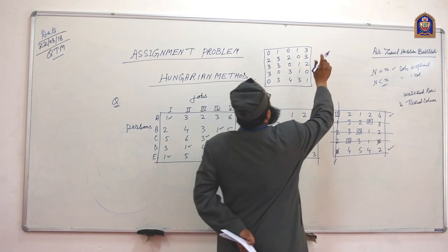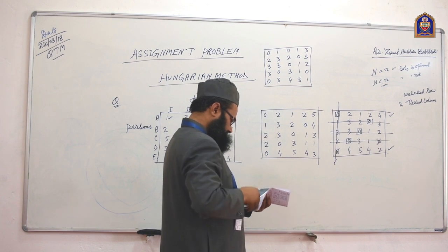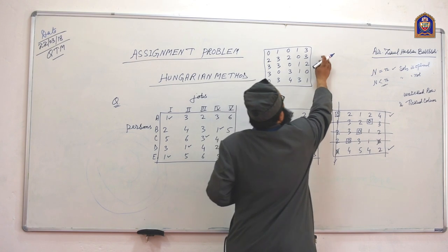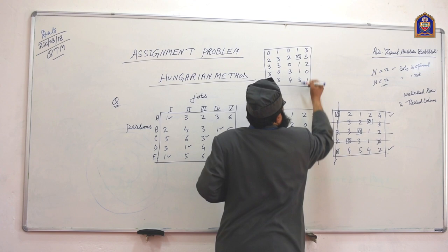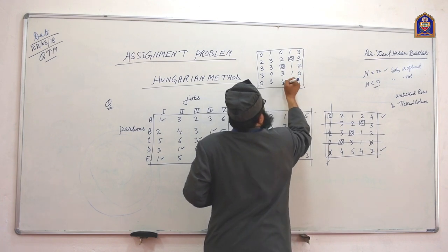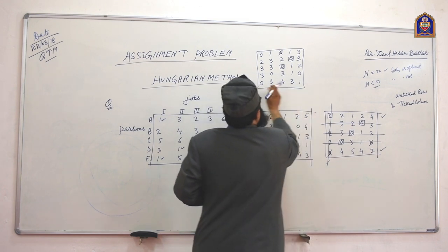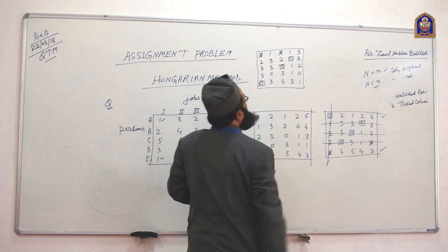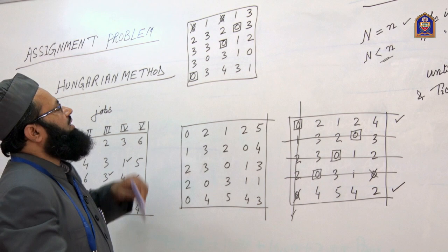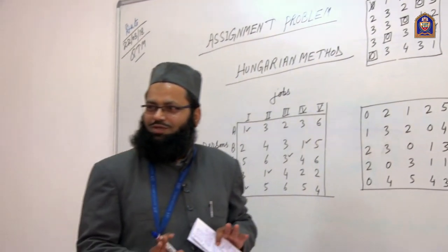Now we assign zeros again. First row has two zeros, leave it. Second row has a single zero, assign here. Third row has a single zero, assign and cross. Fourth row has two zeros, leave it. Fifth row has a single zero, assign and cross. Column operation: first column has an assigned zero. Second column has a single zero, assign and cross. We now have 4 zeros assigned. Our solution is still not optimal.